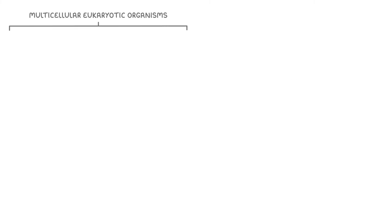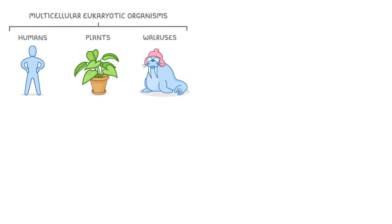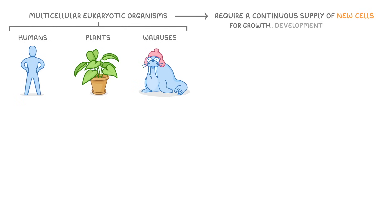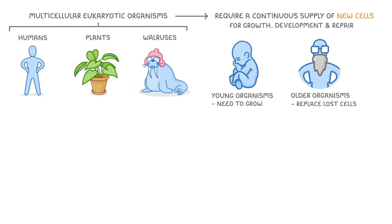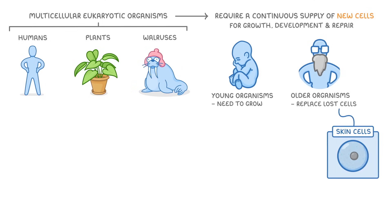All multicellular eukaryotic organisms, whether they're humans, plants, or walruses, require a continuous supply of new cells, which can be used for growth, development, and repair. This is particularly true for young organisms who need to grow in size, but it's also true for older organisms who must constantly replace lost cells, for instance the skin cells which continuously fall off our bodies.